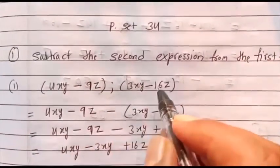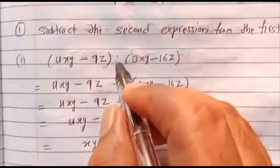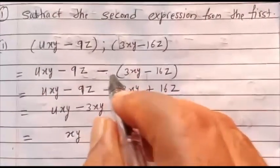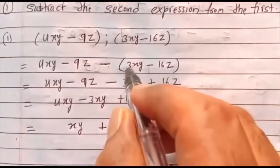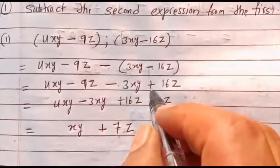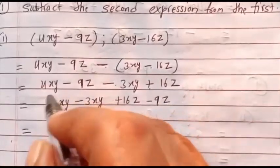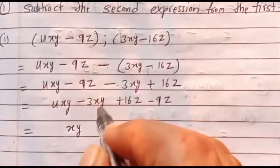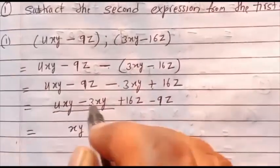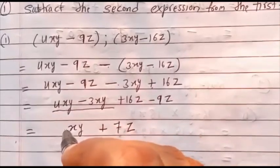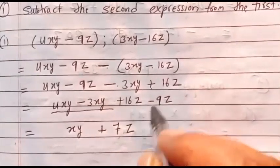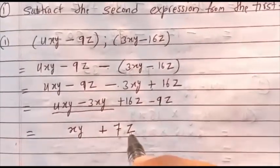3xy minus 16z is the second expression. We put the minus sign; taking the minus sign inside the bracket, all the signs will change — plus becomes minus, minus becomes plus. Collecting like terms: 4xy minus 3xy, then plus 16z minus 9z. 4 minus 3 is 1, so we write xy. 16 minus 9 is 7z. The answer is xy plus 7z.